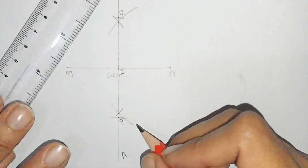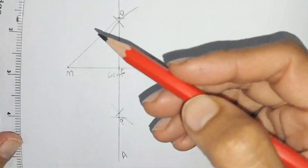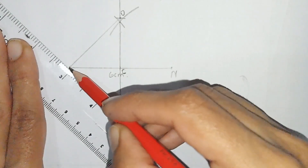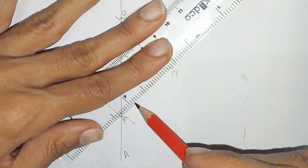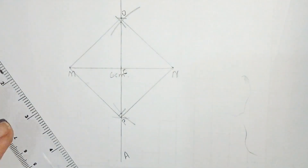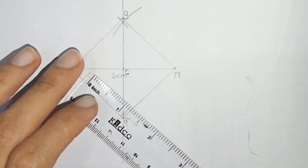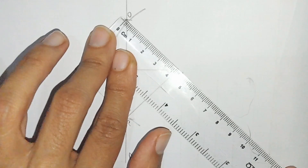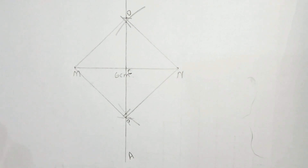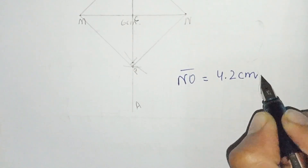Now join M with O, N with P, and N with O. We have to measure and write down NO. Measuring the line NO — NO is equal to 4.2 centimeters.